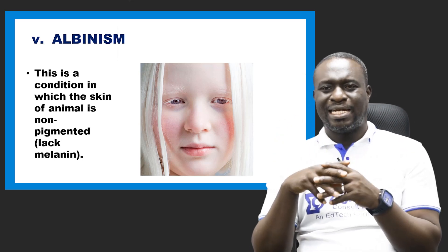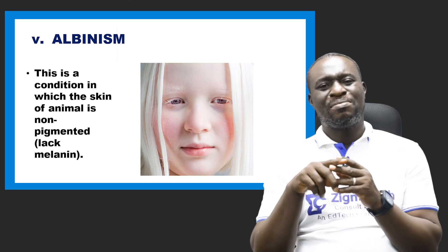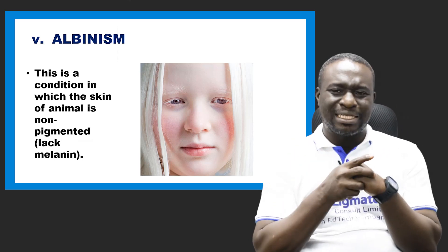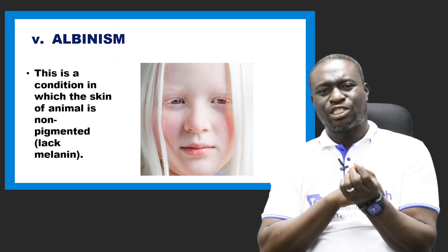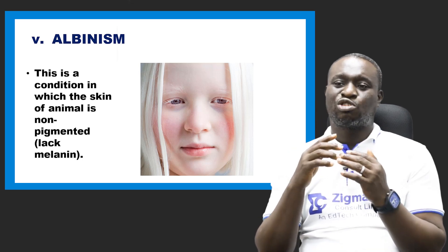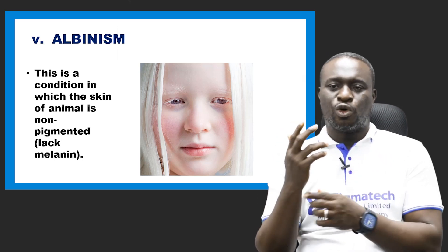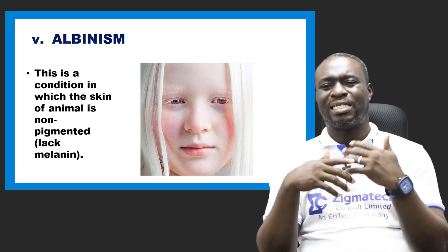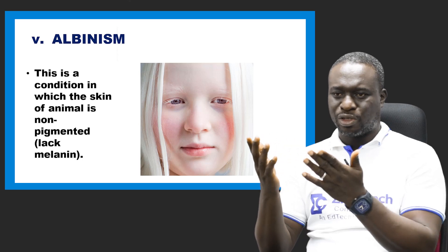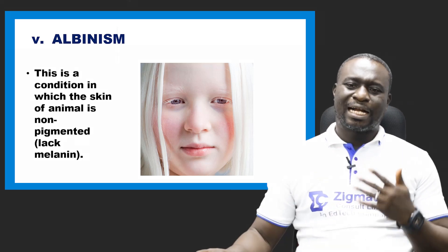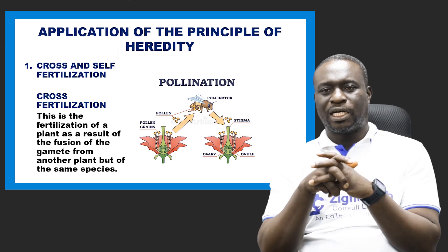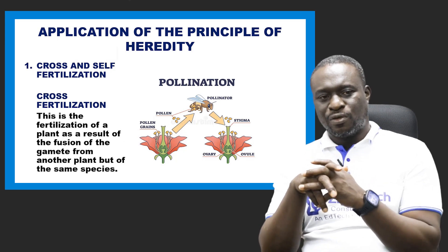Another sex-linked characteristic is albinism. Albinism is actually a condition in which the skin of an animal is non-pigmented — meaning it has no color or it is lacking what we call melanin. Melanin is what gives the skin its color. Once an animal is lacking melanin, that animal can be referred to as an albino, or the condition is called albinism. As you can see on the screen, that is albinism — the lack of melanin. Those are the five sex-linked characteristics.